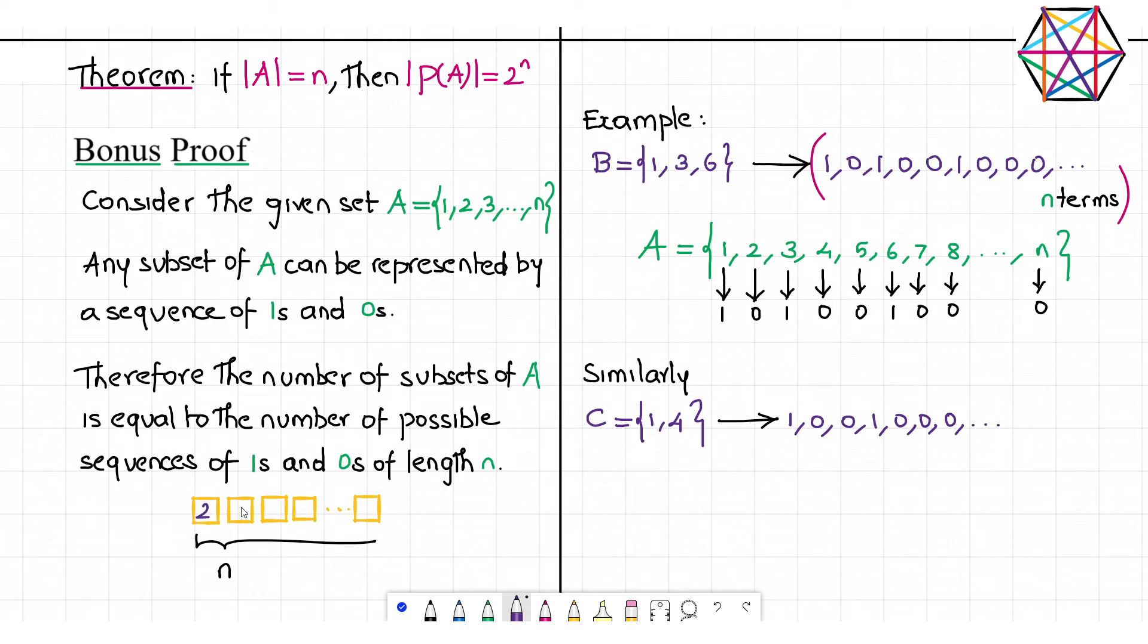What about the second block? Again, two different ways. What about the third block? Two different ways. What about the fourth block? Two different ways. It goes on up to the last block which represents the last term of that sequence of length n. Again, two different ways. Now we apply the multiplication principle of counting. So 2 is being multiplied by itself n number of times. The answer is 2 power n. Hence proved.